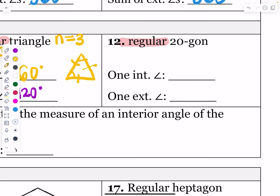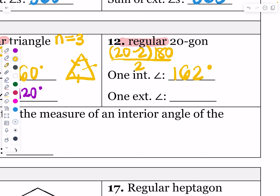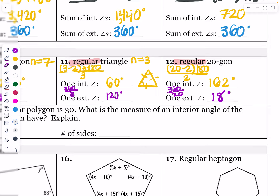For a regular 20-gon, that's 20 minus 2, giving 18 triangles times 180 divided by 20. The sum is 3,240 divided by 20, giving 162 degrees for each interior angle. The exterior angle is 360 divided by 20, which gives 18 degrees — the supplement of 162. So the interior angle is 162 degrees and the exterior angle is 18 degrees.